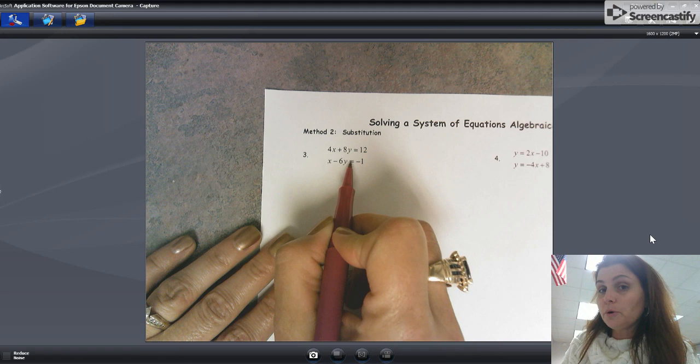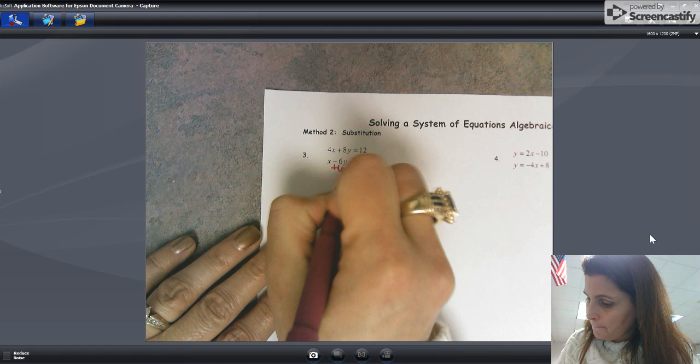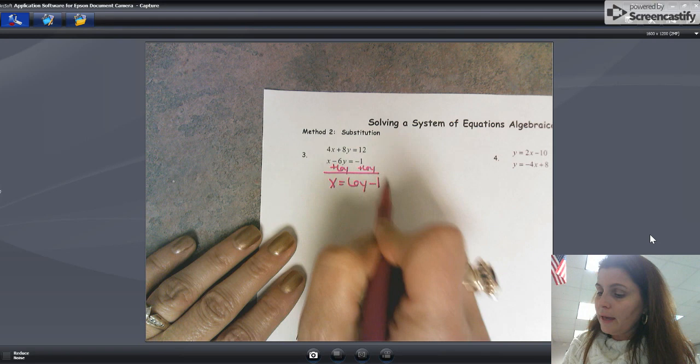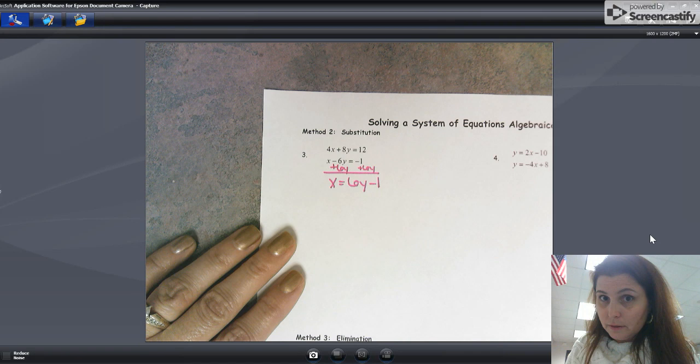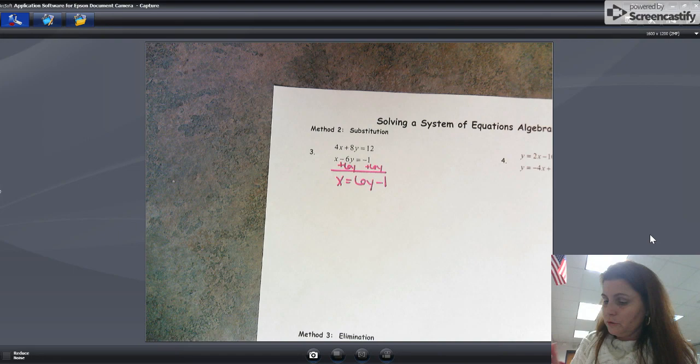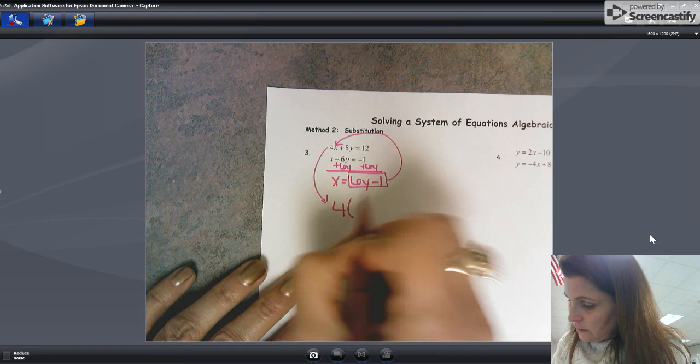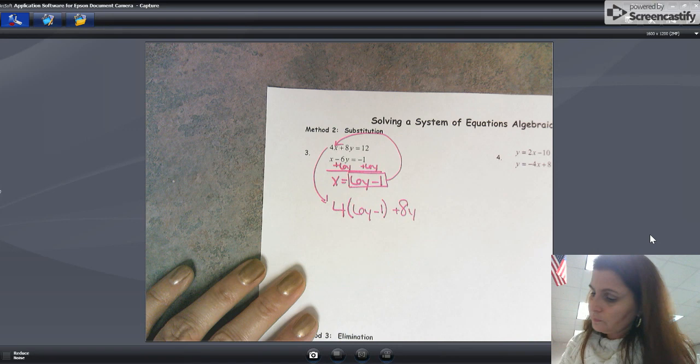Look at this: x has a coefficient of one. If I added 6y to both sides, then this equation would be solved for x. So I'm going to add 6y to both sides of the equal sign. Then I have x equals 6y minus one. Now I can take everything that x equals and substitute it in for the x in the other equation. Make sure you use the other equation when you're solving. So I'm going to take this here, sub it in, sub it in for that x. So that's going to give me 4 times x, but not x, 6y minus 1, plus 8y equals 12.